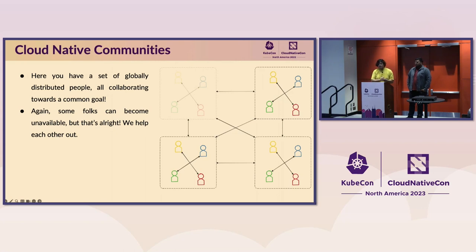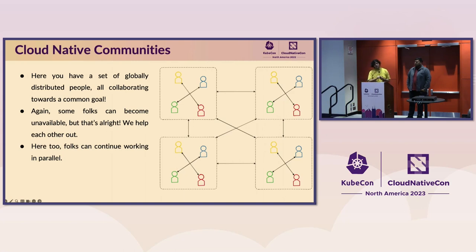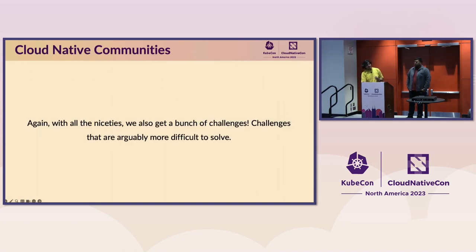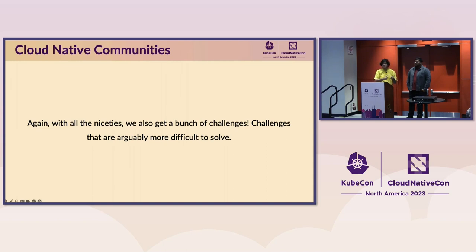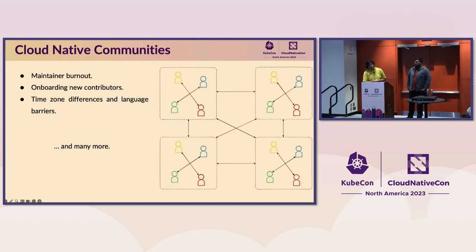Cloud-native communities don't look very different. We have a globally distributed set of people, all collaborating towards a common goal. Some folks can become unavailable, but that's all right — we help each other out. Folks can continue working in parallel without the need to communicate with each other. Again, with all the niceness, we get a bunch of challenges — challenges that are arguably more difficult to solve than those in distributed systems, because these involve humans. Challenges like maintainer burnout, onboarding new contributors, time zone differences, language barriers, and cultural barriers.